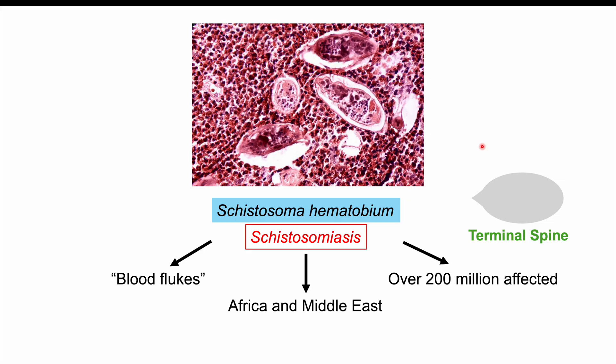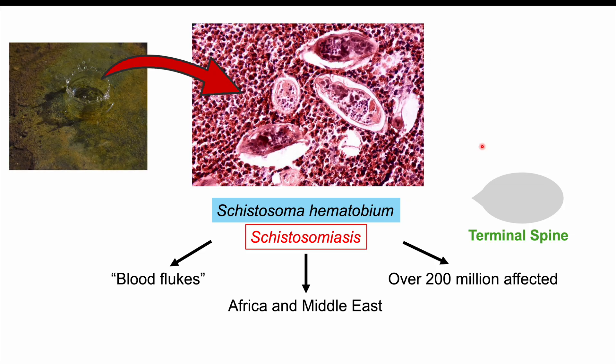A lot of these infections, especially with Schistosoma hematobium, can occur in very young infants and children. This can be their first exposure to this parasite, even at ages of 2 to 5. Exposure occurs via contaminated water.